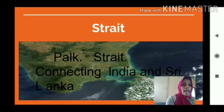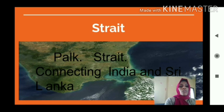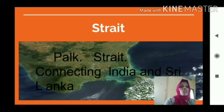Strait is the last type of landform. Strait means a narrow strip of water connecting two different land masses. Palk Strait is an example — it is connecting two different countries, India and Sri Lanka. Strait means a narrow strip of water connecting two countries.